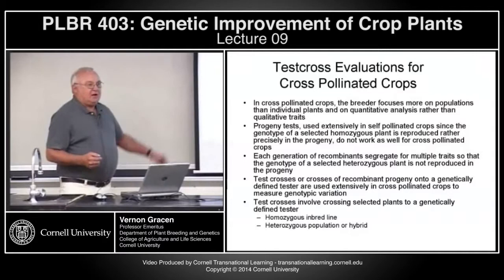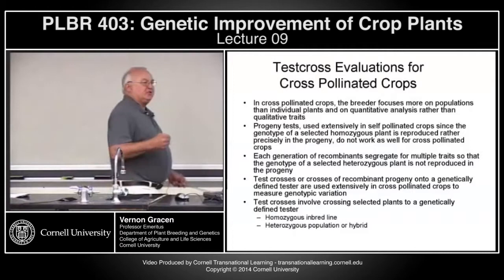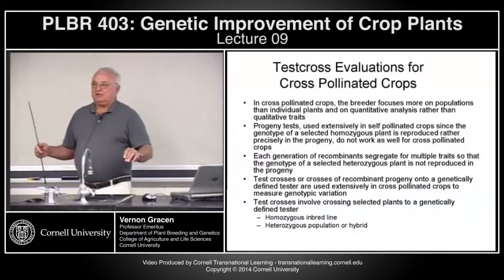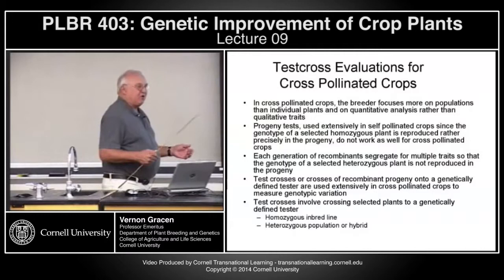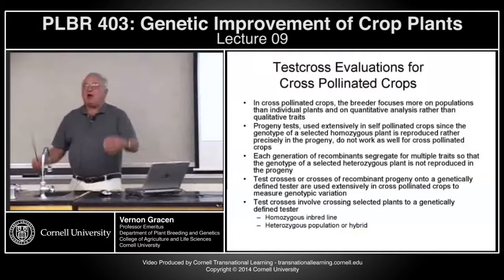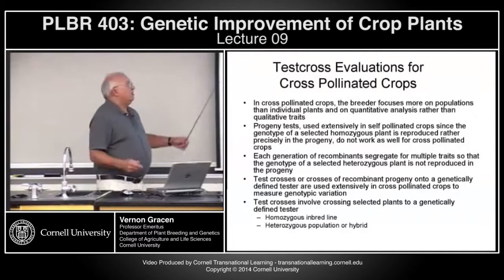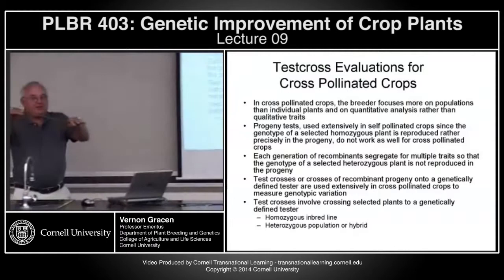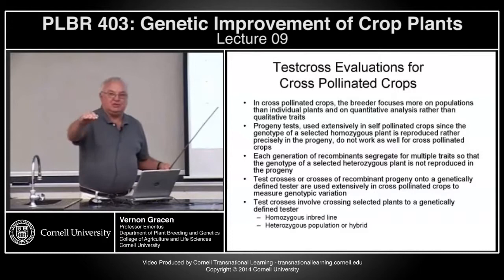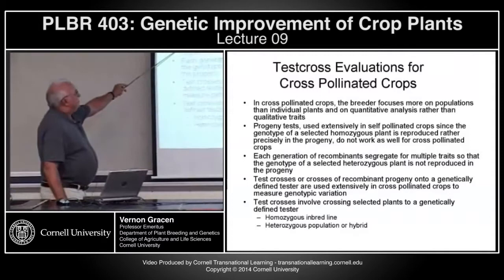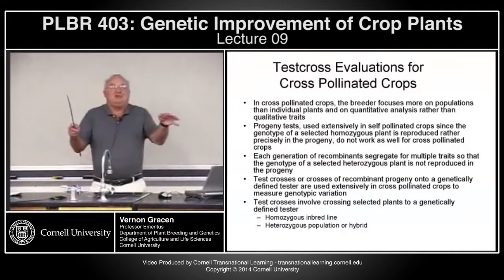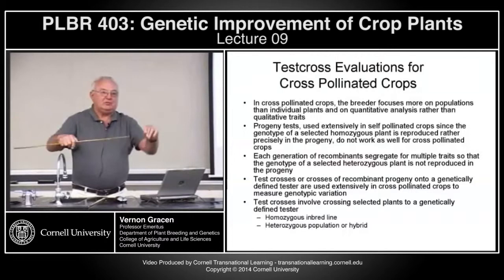Another major difference caused by the difference in genetic composition of self and cross-pollinated crops: in self-pollinated crops, since progeny basically look like the parents — if you're homozygous at F5 or F6, all progeny from that self-plant are fairly uniform and homozygous — progeny tests are quite useful. In cross-pollinated varieties, these progeny tests aren't nearly as useful. The breeder focuses on the population rather than an individual plant, because you just can't reproduce that individual plant's genotype in succeeding generations.